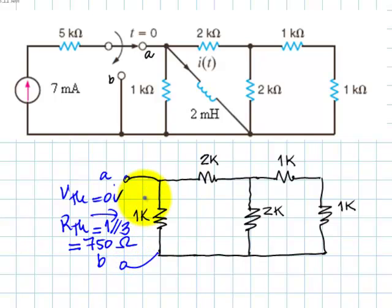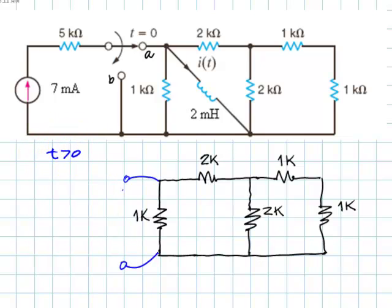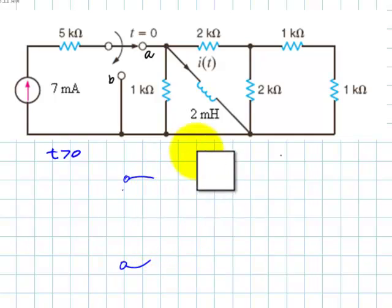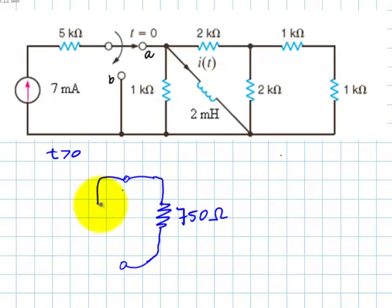Now that we know that, we connect the inductor again. This is the circuit for T after zero. We replace this circuit by its Thevenin, which is only one resistor of 750 ohms, and reconnect the inductor. 2 mH connected to 750. What is the final current in here? That's very easy. This final current in the inductor is going to be zero amps, of course. There is no source in here. The final current in the inductor is zero amps.